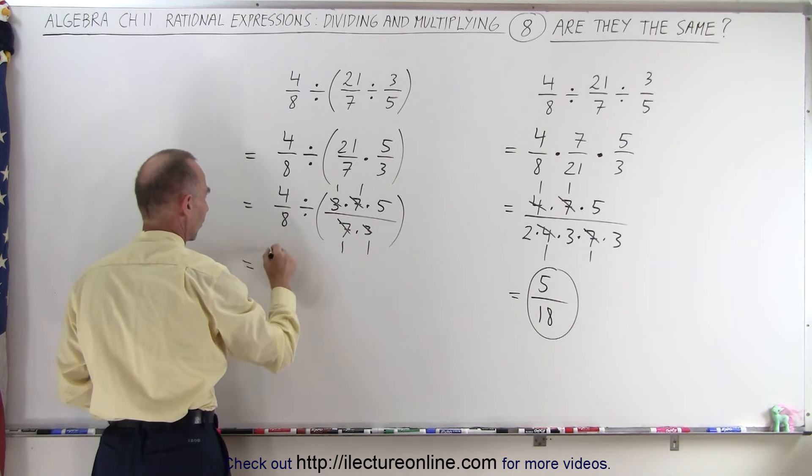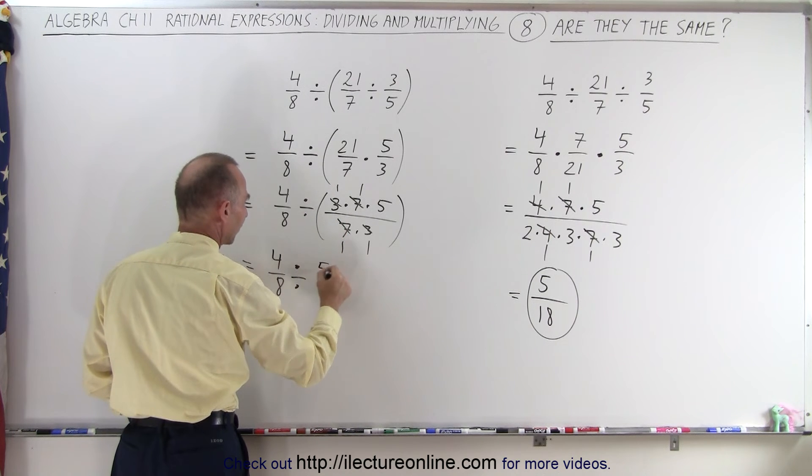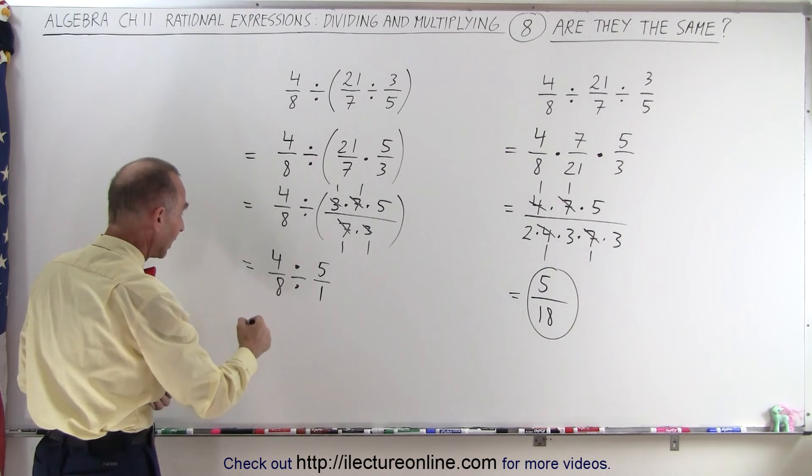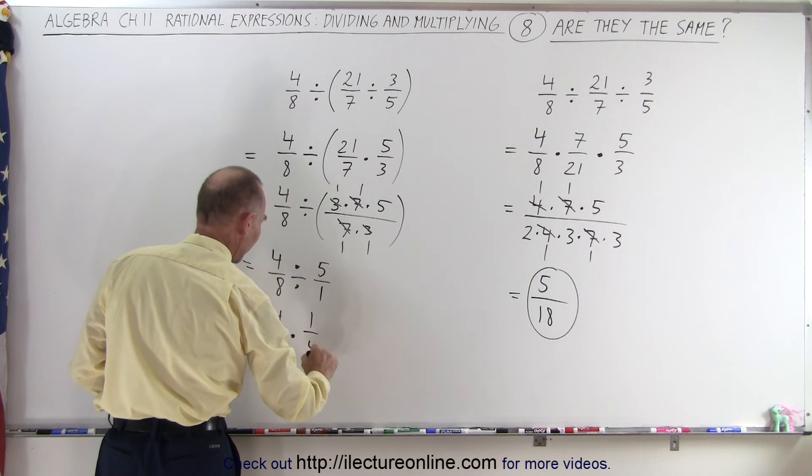So we're left with 4 over 8, divided by, and that becomes 5 over 1. Now we can simplify this by first making that into a multiplication, 4 over 8 times 1 over 5.